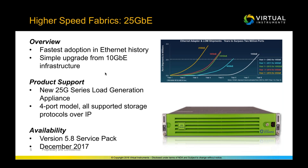We are coming out with a brand-new 25-gig series load generation appliance by the end of this year. It's not available right now with version 5.8 GA, but it will be in a version 5.8 service pack in December. It will be a four-port model supporting all IP storage protocols currently supported on 10-gig and 40-gig Ethernet load generation appliances, at line rate on every single port.